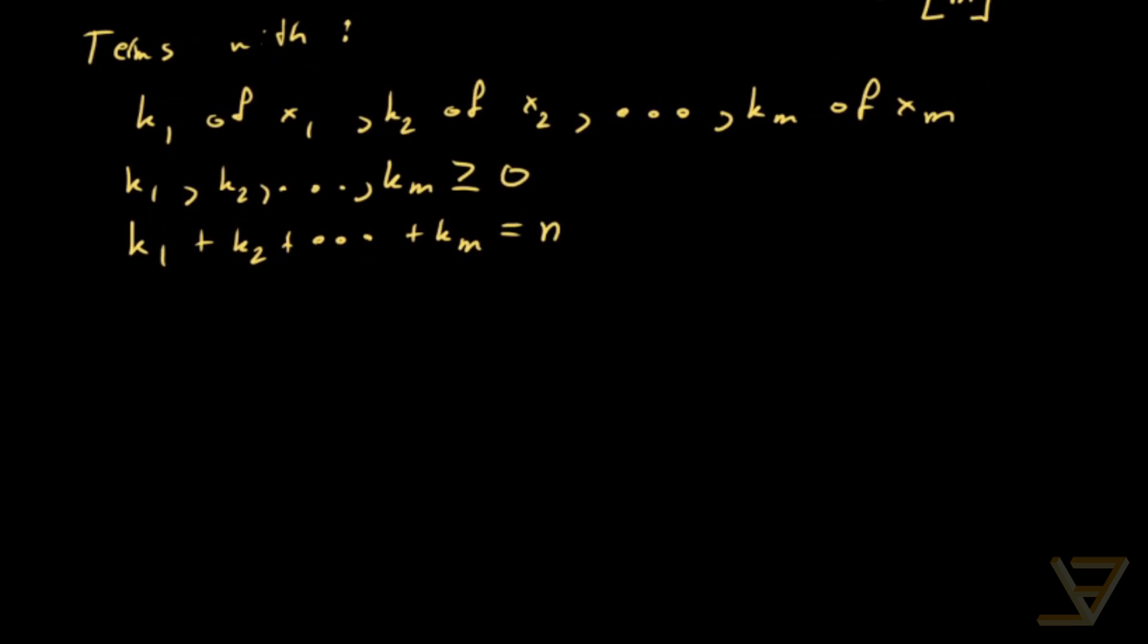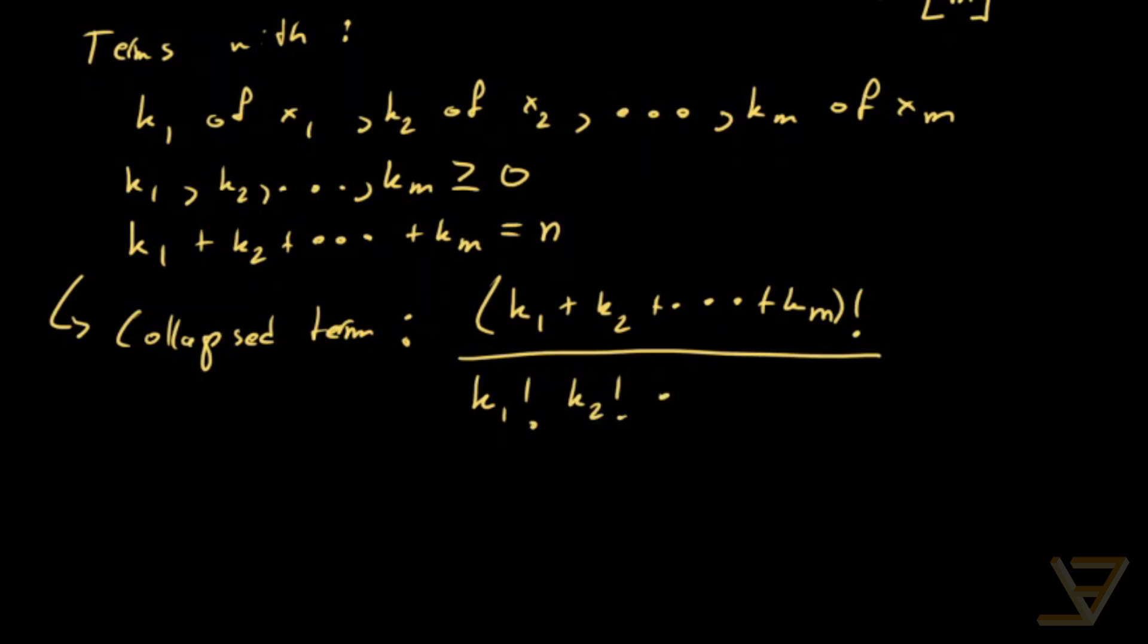And that means that, if we were to fix it, then after collapsing—and what I mean by collapsing is collecting like terms—the coefficient is the permutation: k1 plus k2, all the way through to km, factorial, divided by k1 factorial, k2 factorial, all the way through to km factorial. And this is none other than the multinomial coefficient.